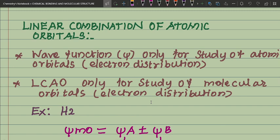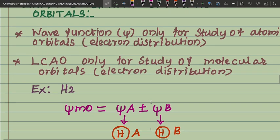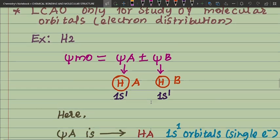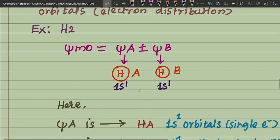Example: H2 molecule. The wave function for the molecular orbital equals psi-A plus or minus psi-B. Here, psi-A is the hydrogen atom A — a 1s orbital with one electron — and psi-B is hydrogen atom B, also a 1s orbital.